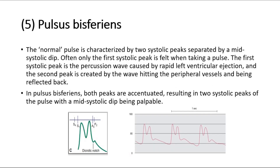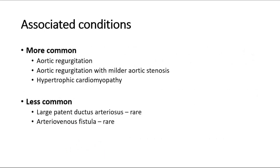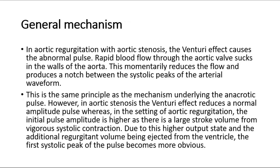The fifth type of pulse is pulsus bisvarians. The normal pulse is characterized by two systolic peaks separated by a mid-systolic dip; often only the first systolic peak is felt when taking a pulse. The first systolic peak is the percussion wave caused by rapid left ventricular ejection, and the second peak is created by the wave hitting the peripheral vessels and being reflected back. In pulsus bisvarians, both peaks are accentuated, resulting in two systolic peaks with a mid-systolic dip being palpable. This is associated with aortic regurgitation, aortic regurgitation with milder aortic stenosis, hypertrophic cardiomyopathy, and can also be due to large patent ductus arteriosus and arteriovenous fistula, although that is rare.